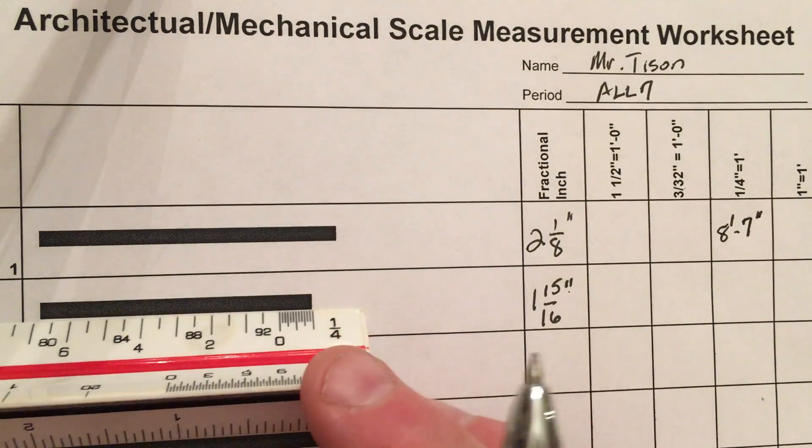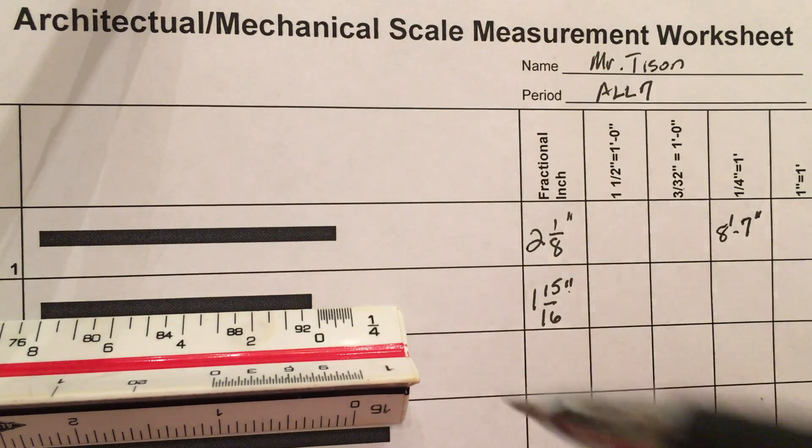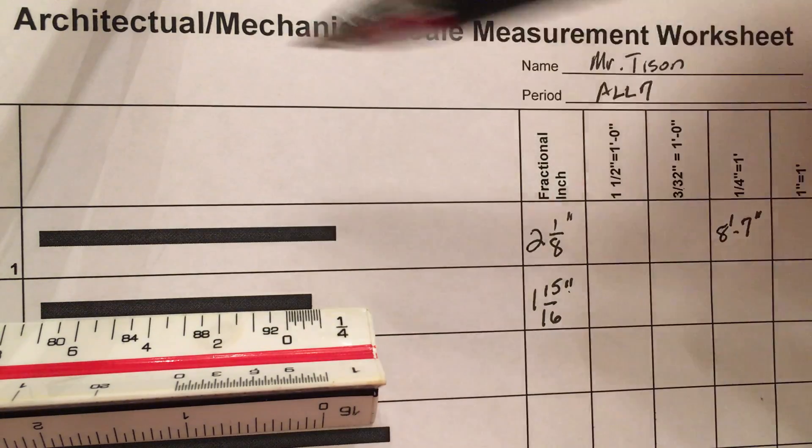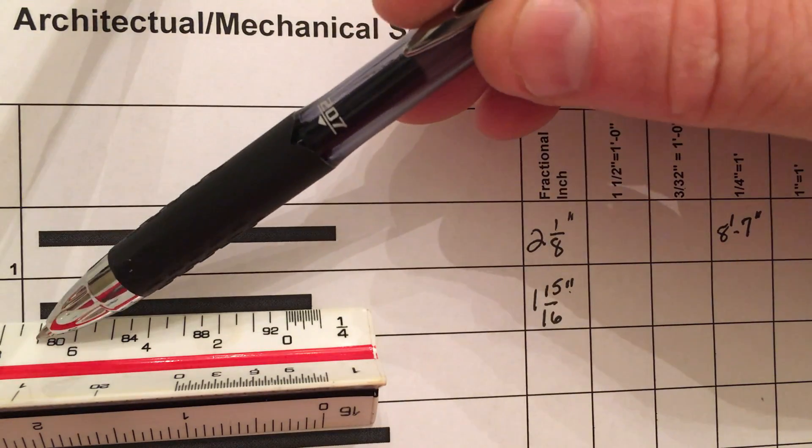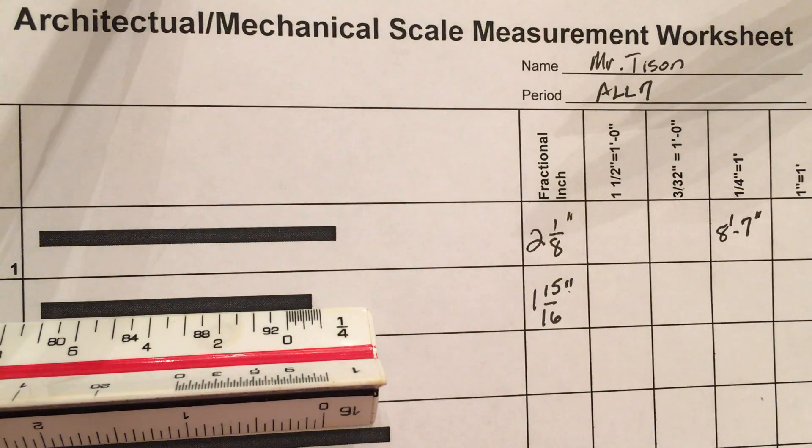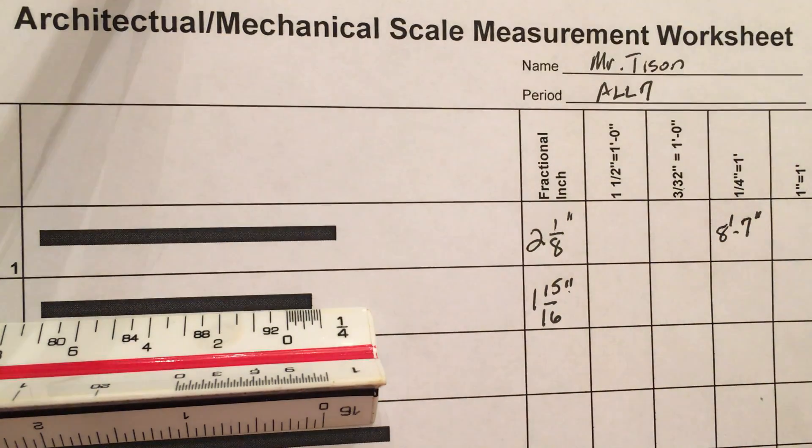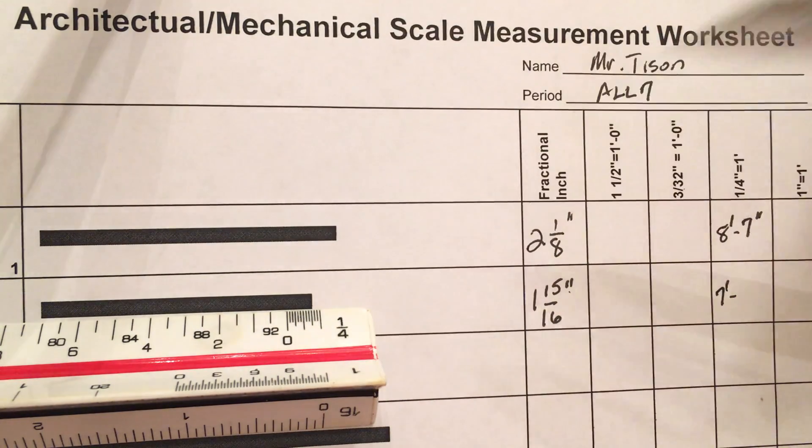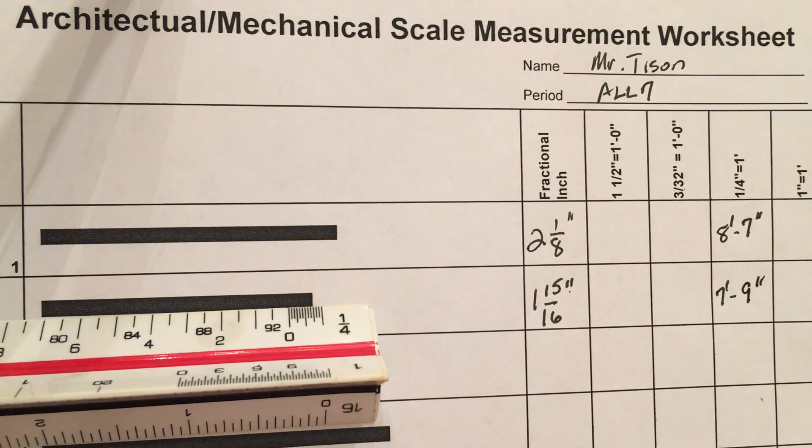All right, let's look at the next one. 8 doesn't get there all the way. We drop back to 7. I know this is 7 because it's between 6 and 8 and it has the same length line. I also can see that that extends out 7 feet 9 inches. Just like that.